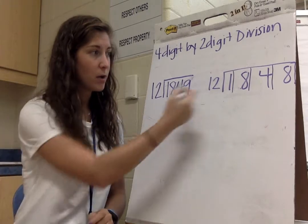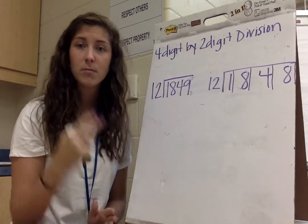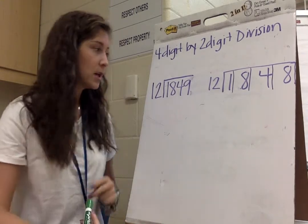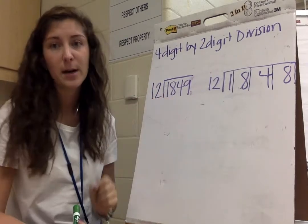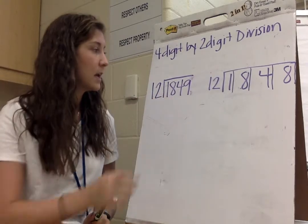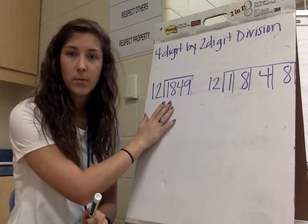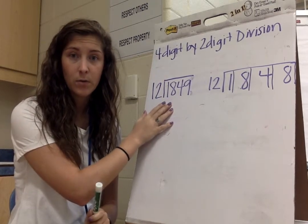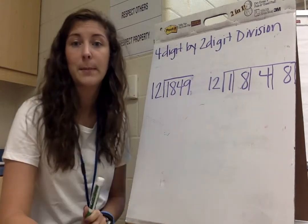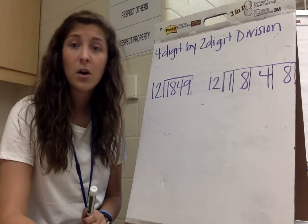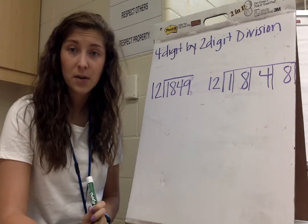I have a problem set up here, and they're the same problems. I'm just going to do it two different ways. So the problem is 1,849 divided by 12. Right here, I have the standard algorithm. Over here, I have what we've been talking about in my class as the box method, or some of you guys also know it as the area model.